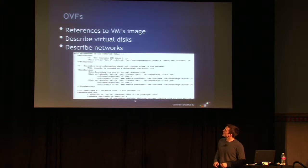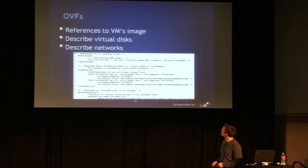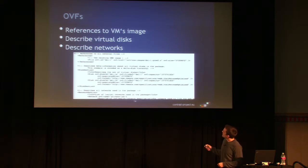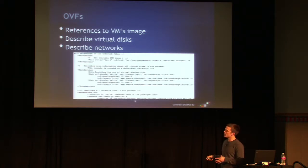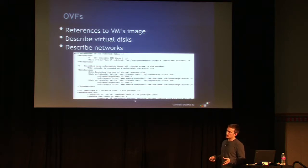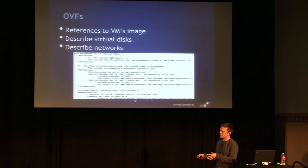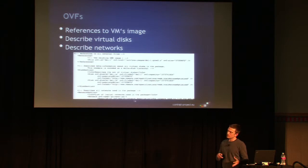A deployment document is then created and a specific SLA is built for that provider and user. Within the OVF, we refer to the virtual machines used within the application. We also describe the size of virtual disks and which kind of network to use — we can choose either the specific Contrail virtual infrastructure network solution, or the native network provided by the provider.